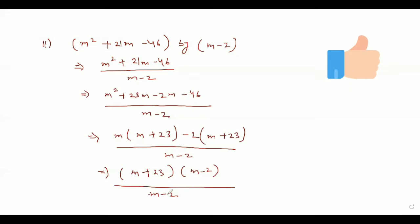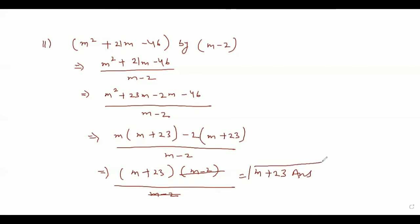This m minus 2 will get cancelled with the denominator m minus 2, and we are left with m plus 23 as our answer. Hope that question is clear. If any type of doubt remains, you can ask me by commenting in the comment box. Now let's come to the third part of question number 3.